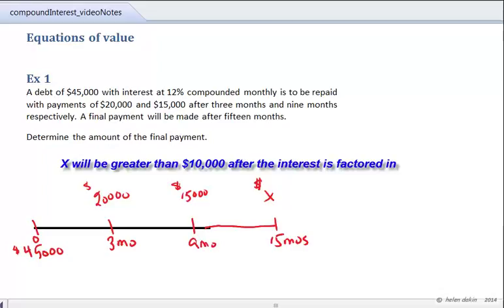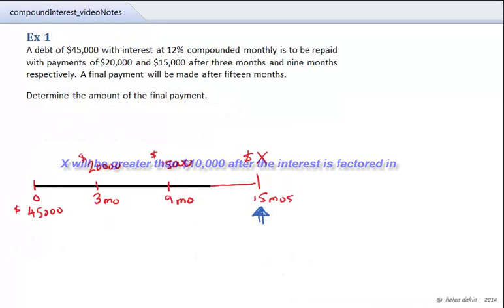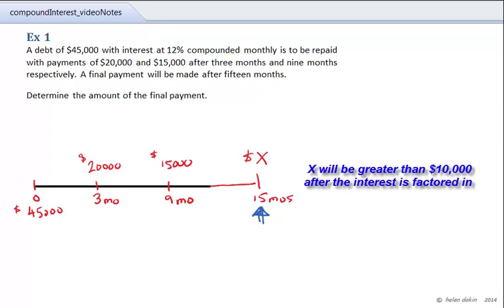So what we need to do now is to select a focal date and the focal date that I'm going to choose is 15 months because that is the date upon which the final payment is going to be made. So 15 months is going to be my focal date and I'll mark that.